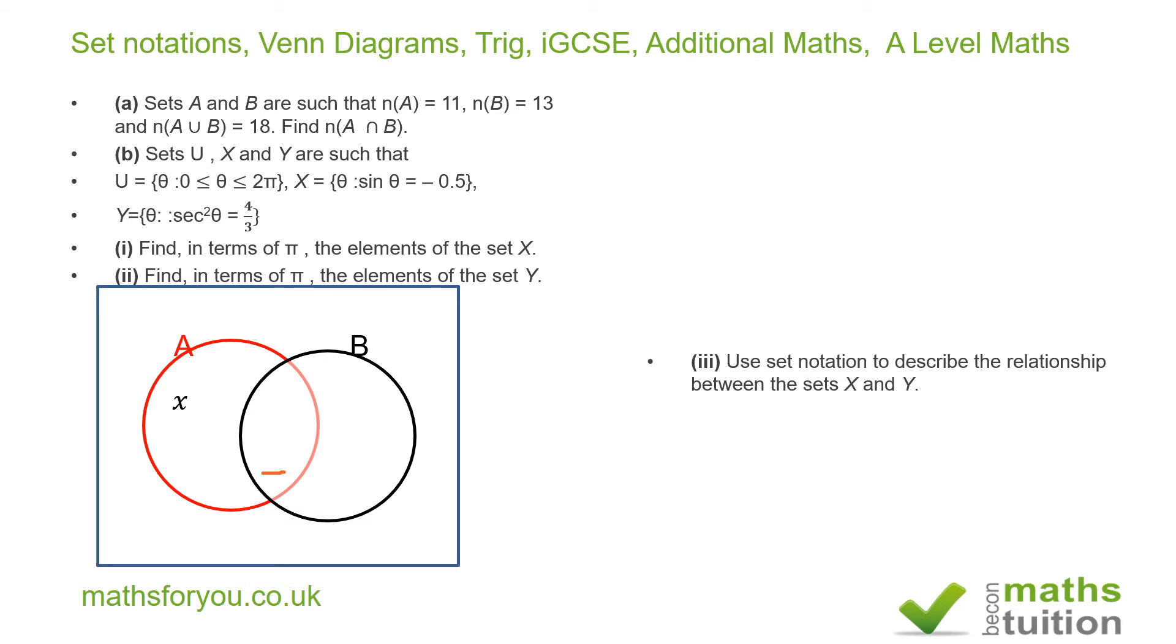So if that's X, it then means that A intersection B will be 11 minus X. Again, we know that the total number of elements in B is 13. So because we've got 11 minus X there, in this region we're going to have 13 minus brackets open 11 minus X brackets closed. So now, because we know that for A and B, the total number of elements for A and B is 18, we are now in a position to construct an equation, and that's what we've got there.